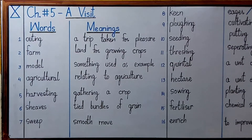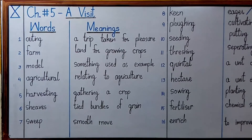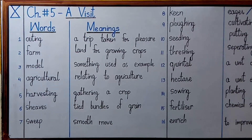Number five is 'harvesting', which means gathering a crop. Once the crop is reaped and cut, we gather it in sheaves. So when the crop is tied up in bundles, that is called harvesting. Number six is 'sheaves'. Sheaves is a tight bundle of grain. 'Sheaf' is the singular form and 'sheaves' is the plural form, meaning tied bundles of grain.